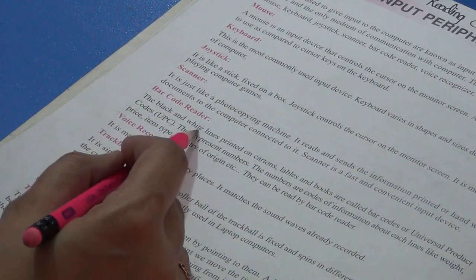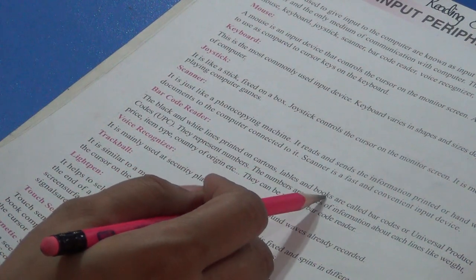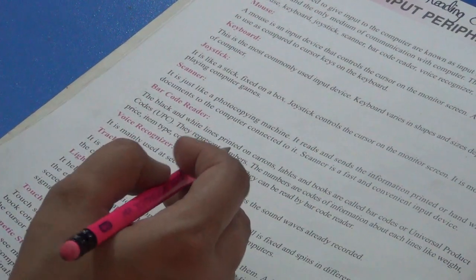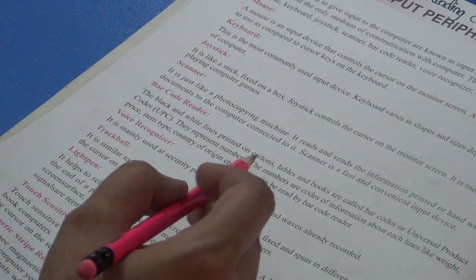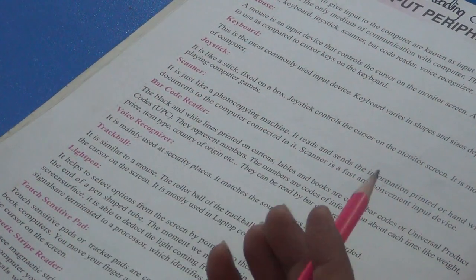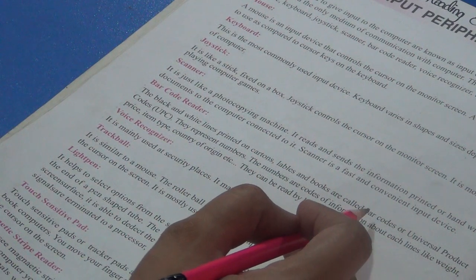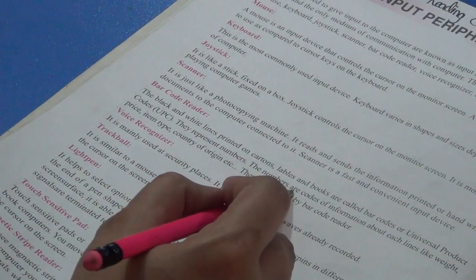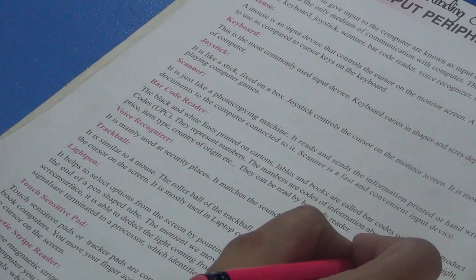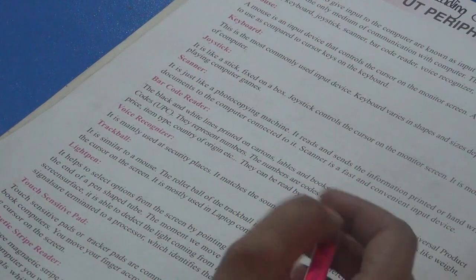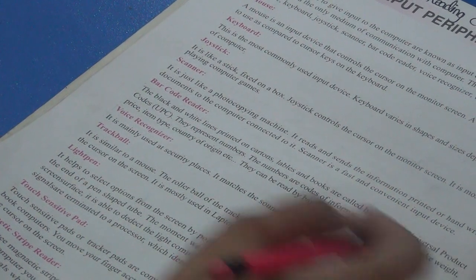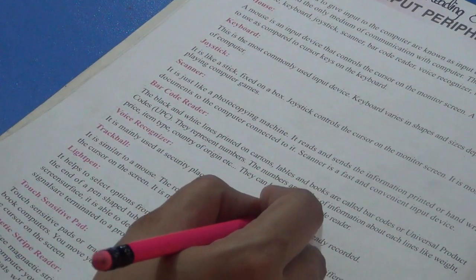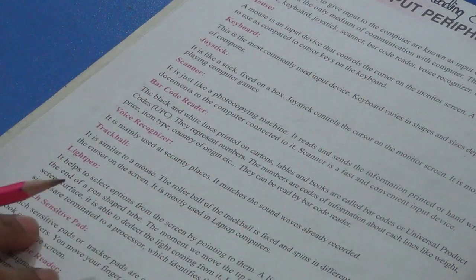Barcode reader. The black and white lines printed on curtains, labels and books are called barcodes or universal product codes. You have seen in copies, lines are there. On curtains there are lines, on books, on labels. These things are done through input devices, through barcode reader. They represent numbers. These numbers are codes of information about each item like weight, price, item type, country of origin, etc. They can be read by barcode reader.